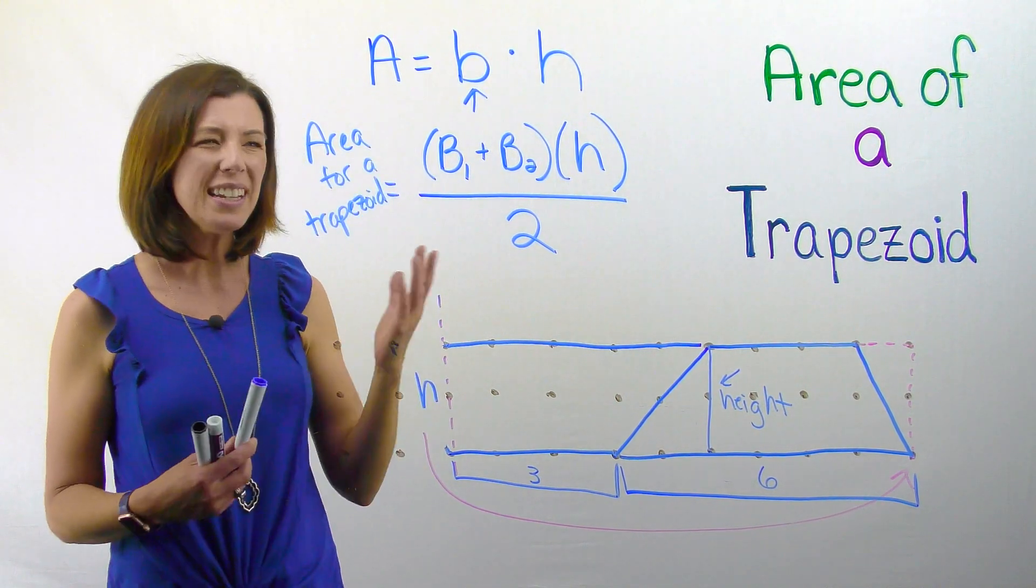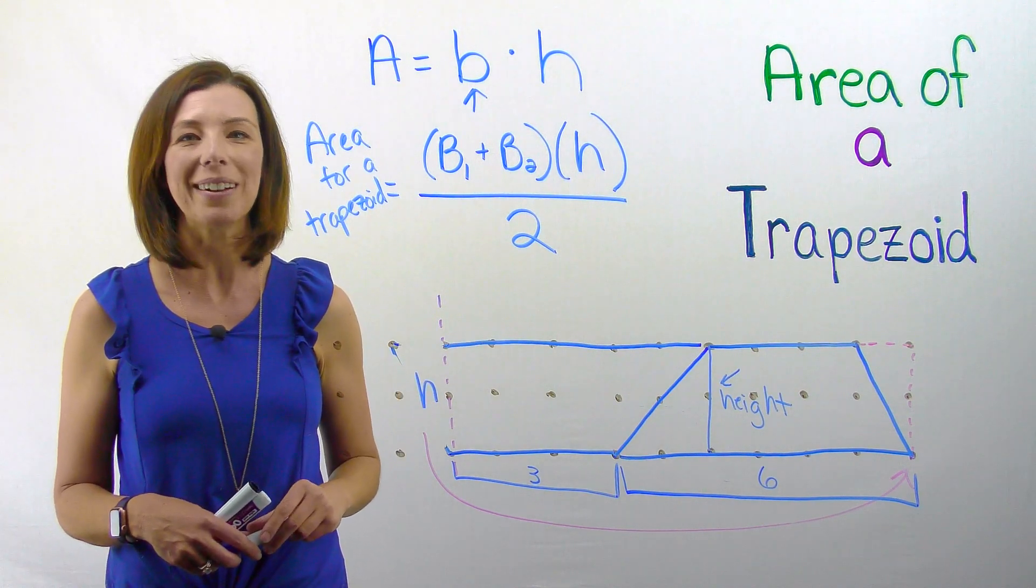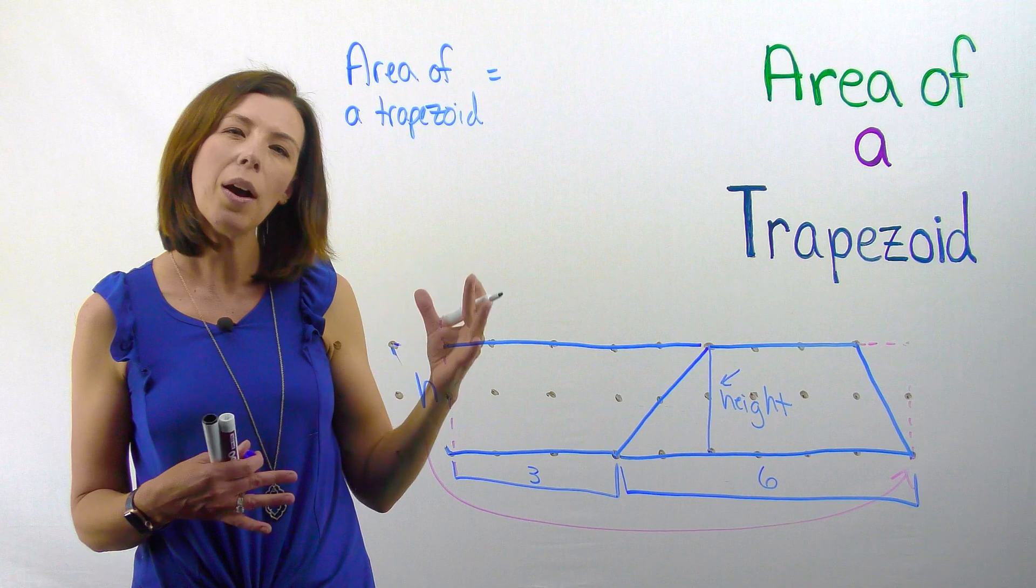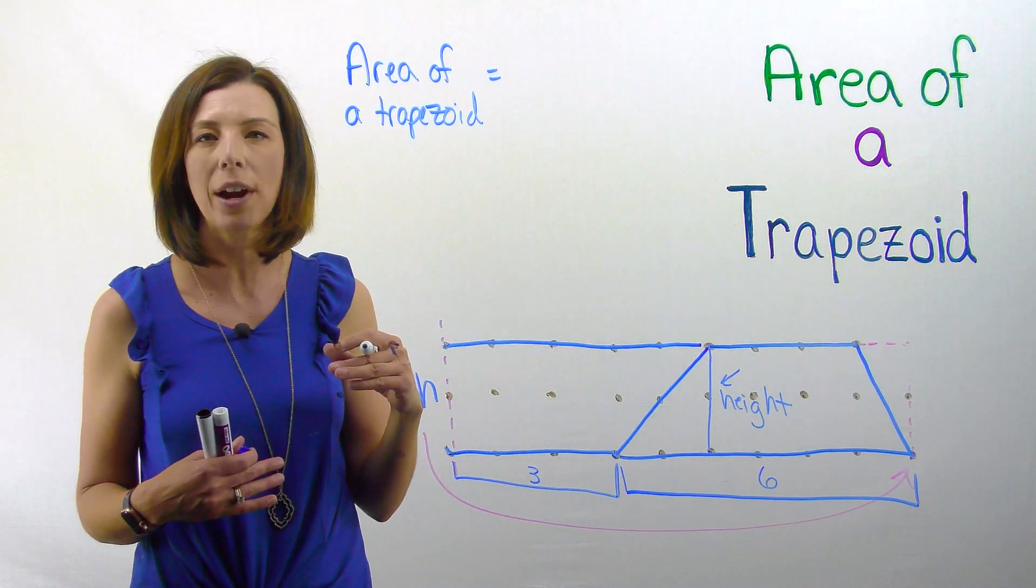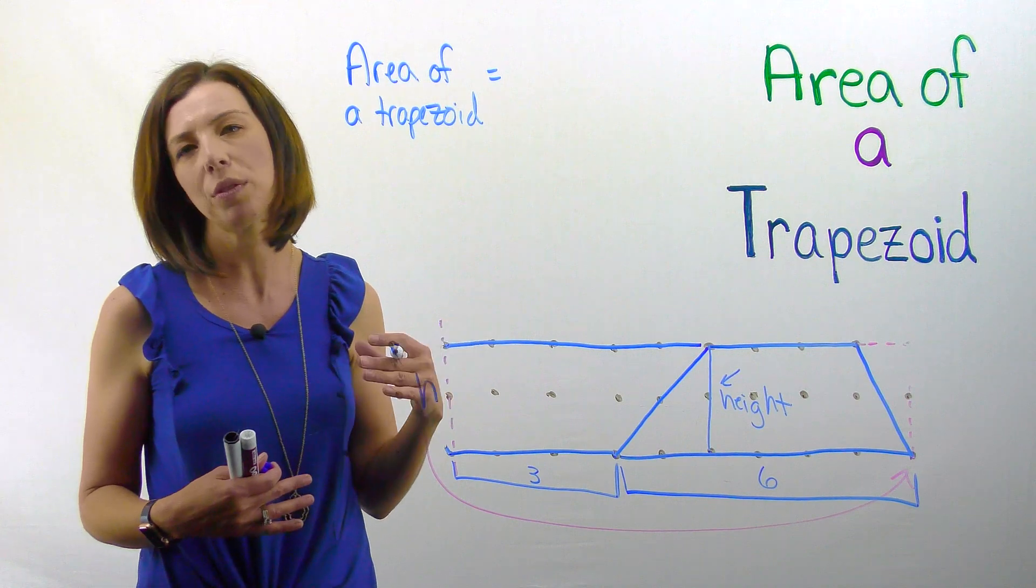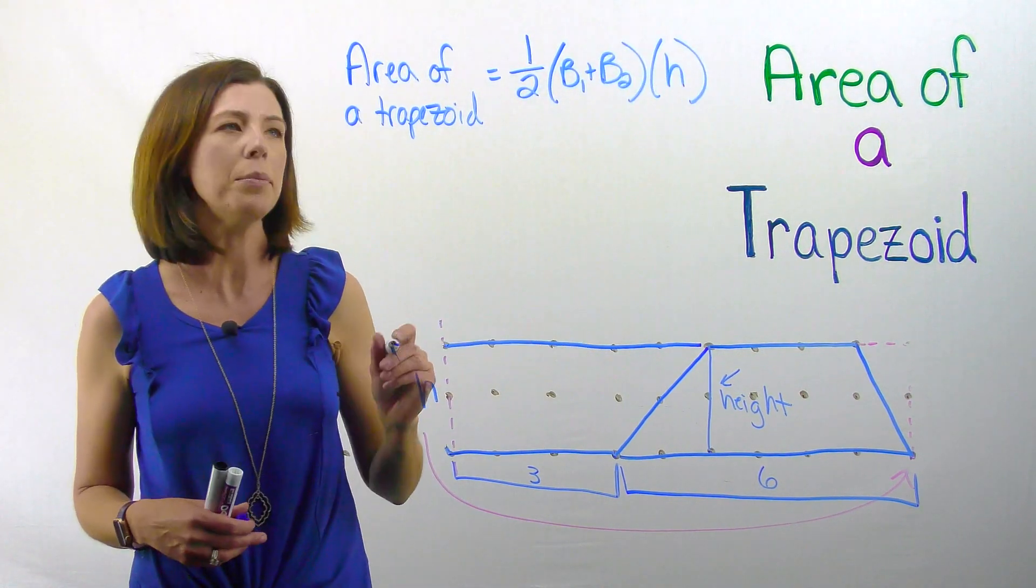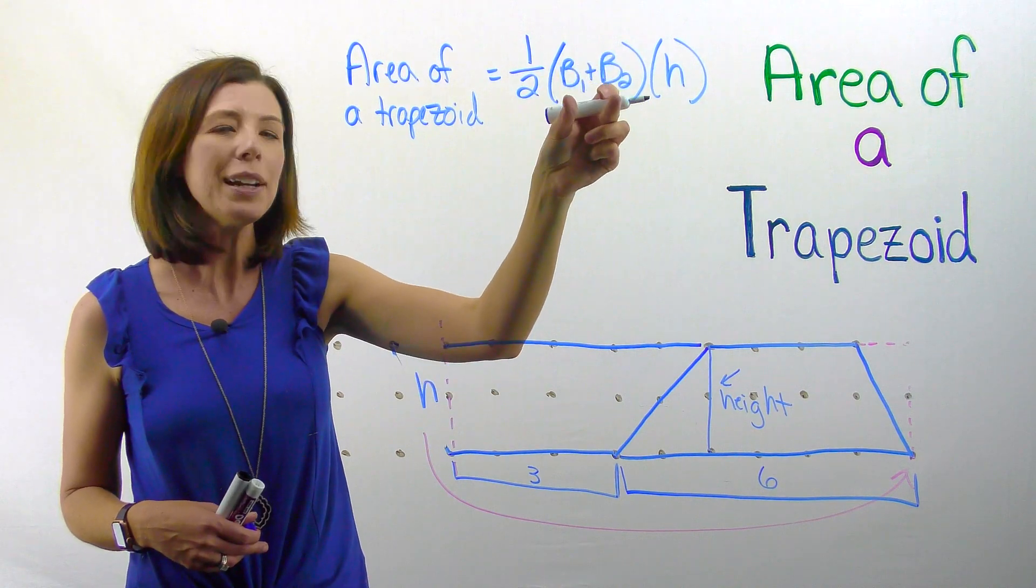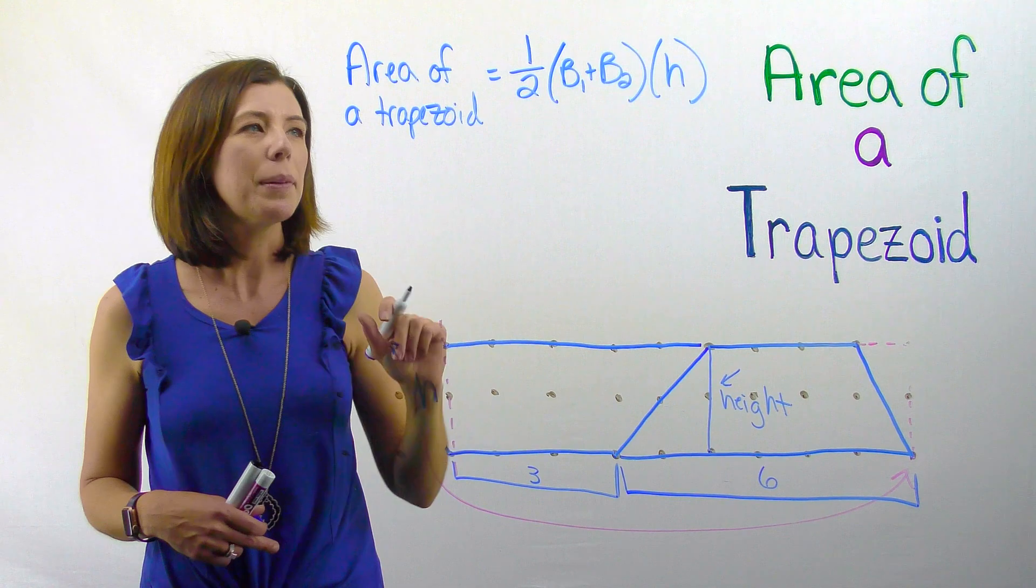Now you might be thinking, is there another way that I can write this? Yes. Let me show you what that looks like as well. Sometimes, just like how we looked at one half times something when we were looking at the formula for a triangle, sometimes we'll see the same sort of notation for a trapezoid. Again, I'm taking one half of my two bases added together and then multiplied times the height.